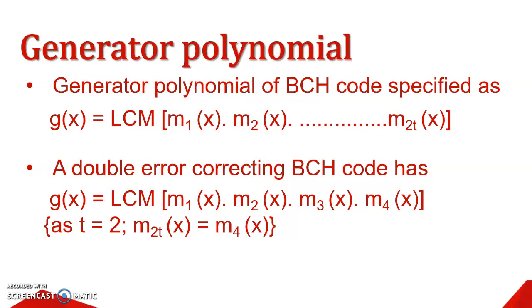Next, how we create generator polynomial? Likewise cyclic code, BCH Code has also generator polynomial which is used to detect and correct error. The generator polynomial for the BCH Code can be calculated as g(x) equals LCM of m1(x), m2(x) up to m2t(x). So, if we say a BCH Code can correct up to double error, then g(x) will be LCM of m1(x), m2(x), m3(x) and m4(x), because t equals 2.